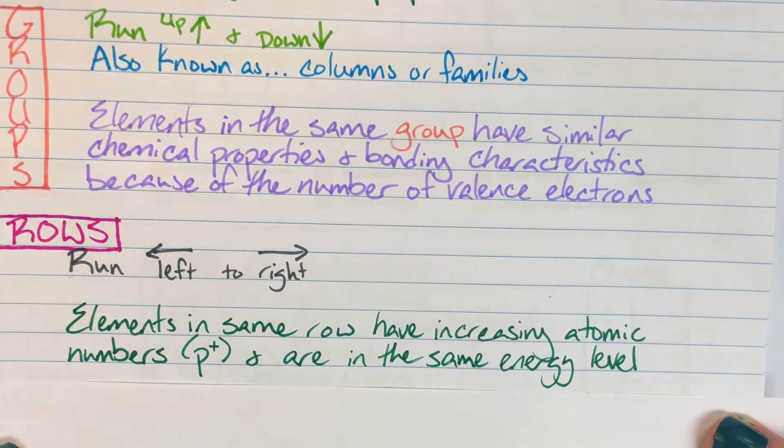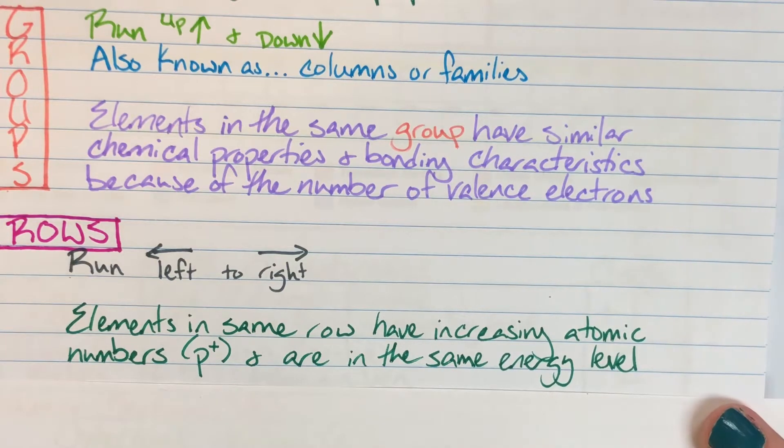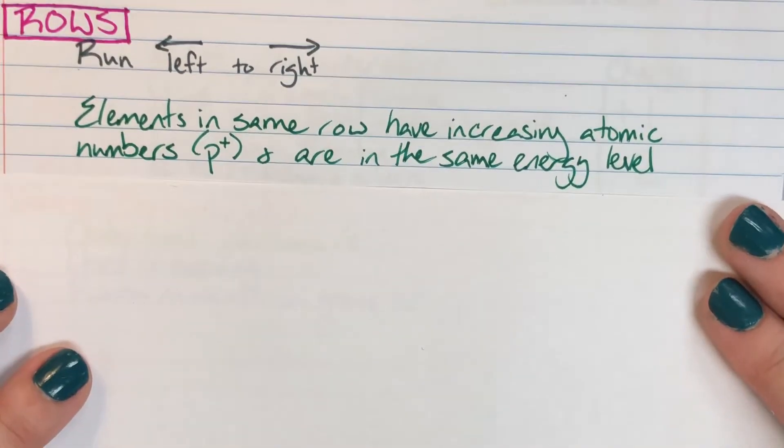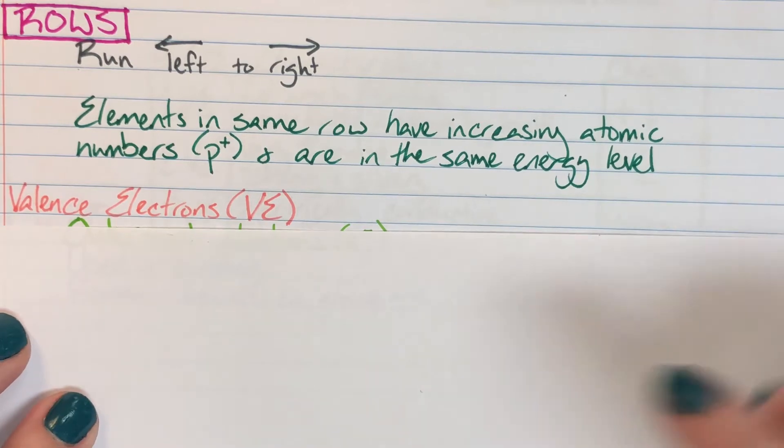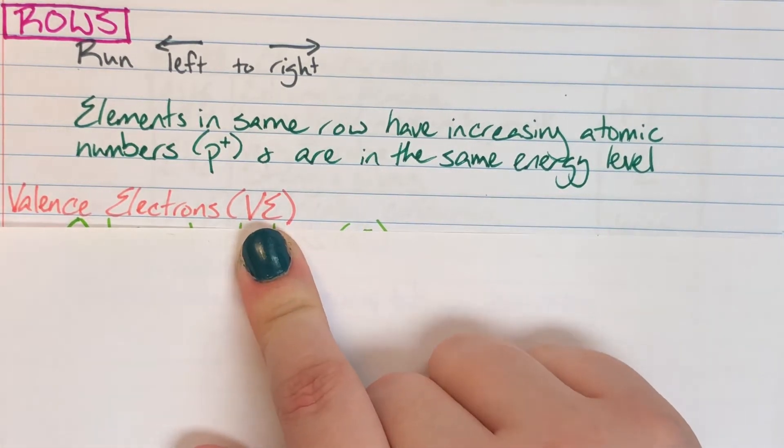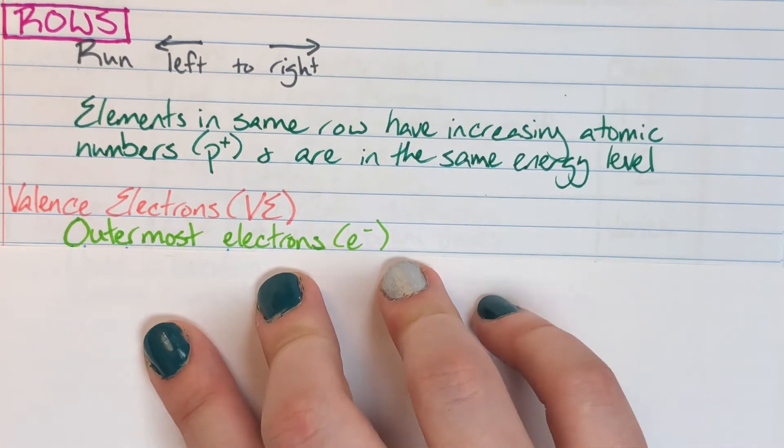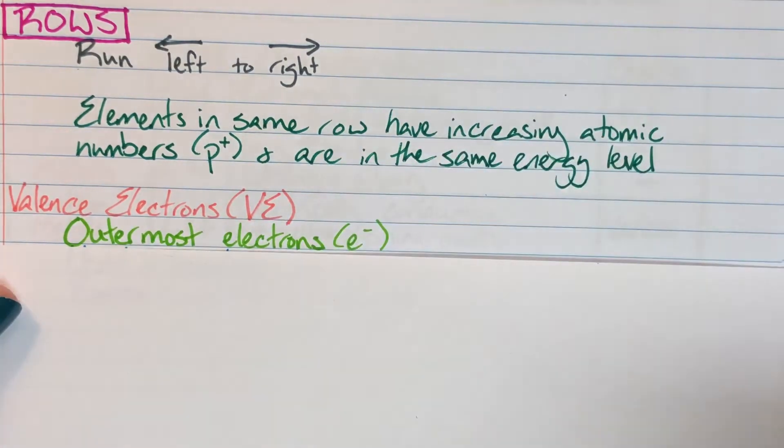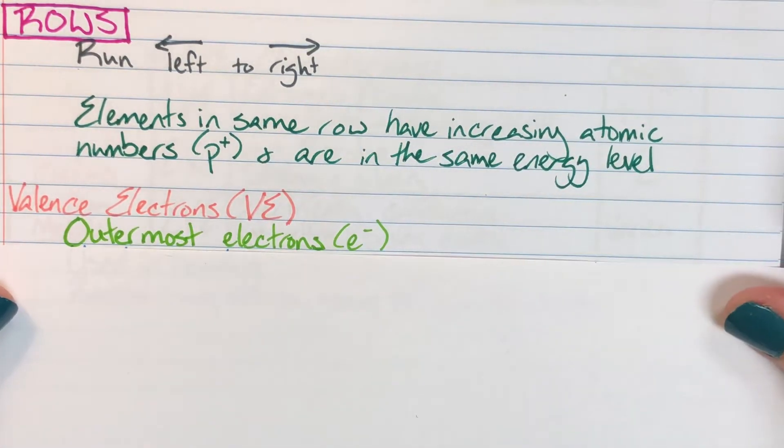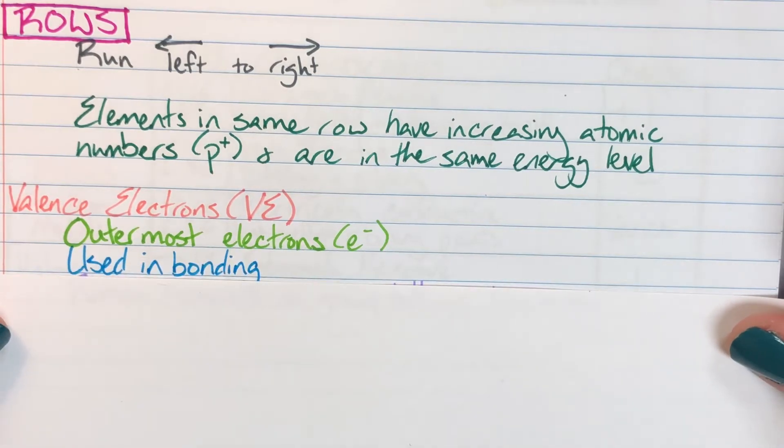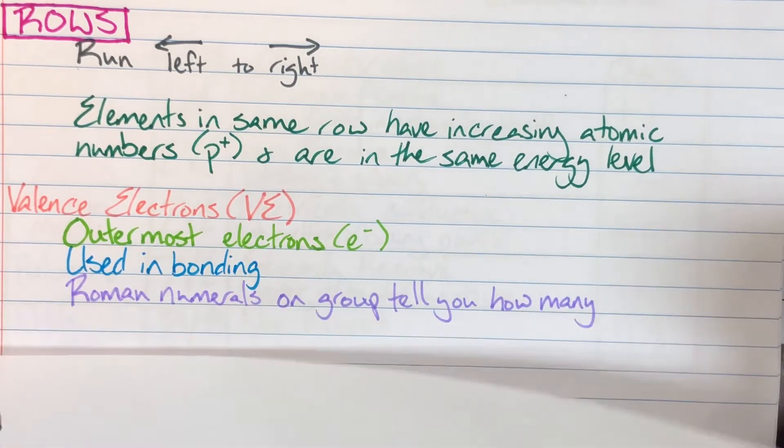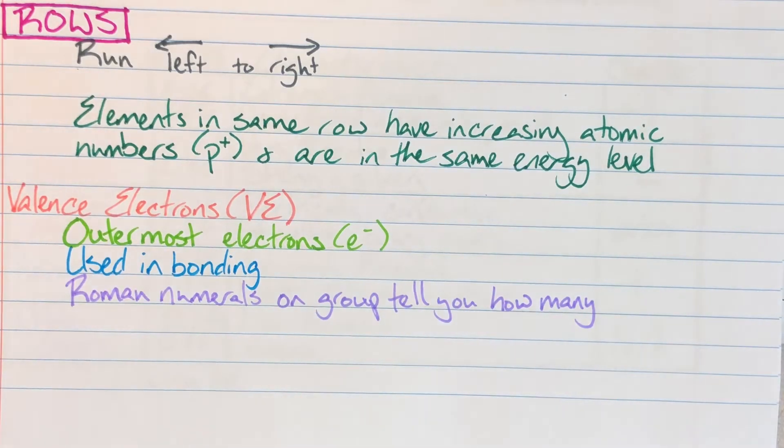The very last thing that we're going to talk about is those valence electrons that I mentioned before in our group section. And that is going to be shorthanded as capital V, capital E for valence electrons. My valence electrons are my outermost electrons. They are the ones on the most outermost shell. They're the only ones that are used in bonding. And we can actually figure out how many valence electrons are in each group based off of the roman numeral on the top of that group.